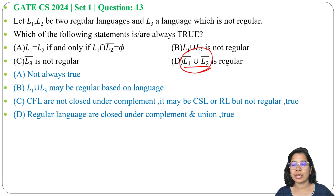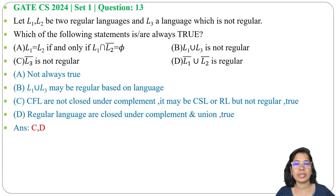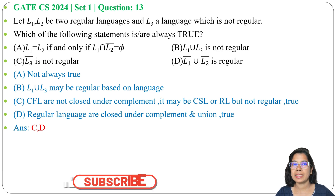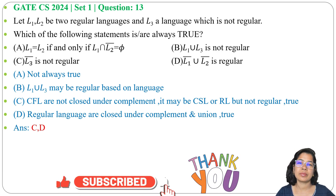Options A and B are false, whereas Options C and D are true. I have already discussed closure properties of all language classes — just go through that lecture. If this lecture was helpful, please like, share, and subscribe. Thank you.